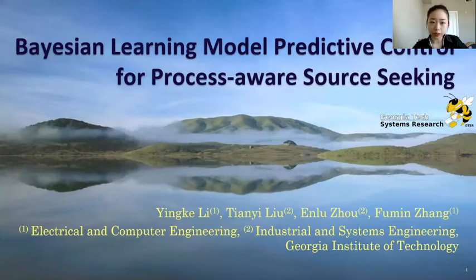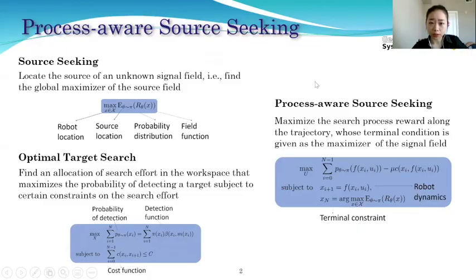Hello, my poster topic is Bayesian Learning Model Predictive Control for Precision Aware Source Seeking. The problem of precision aware source seeking is inspired by the problem of source seeking and the problem of optimal target search. The objective of source seeking is to locate the source of an unknown signal field, which is to find the global maximizer of the source field. The objective of optimal target search is to find an allocation of search effort in the workspace that maximizes the probability of detecting a target subject to certain constraints on the search effort. Combining those two objectives, we propose the precision aware source seeking problem.